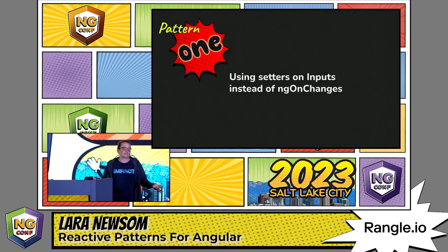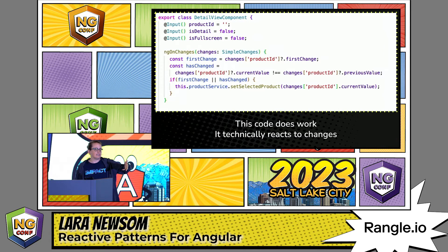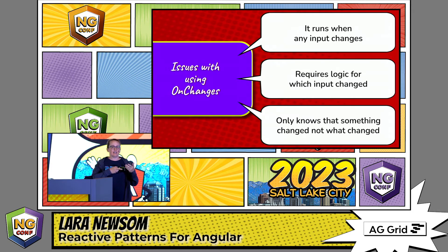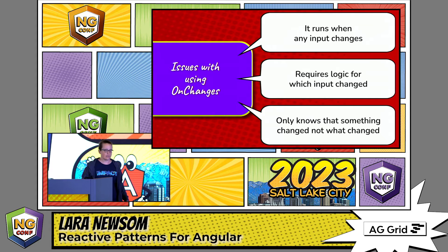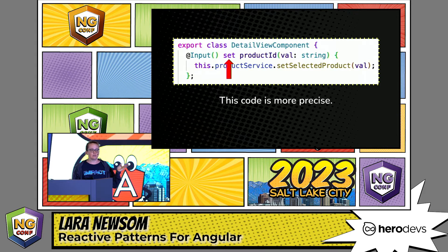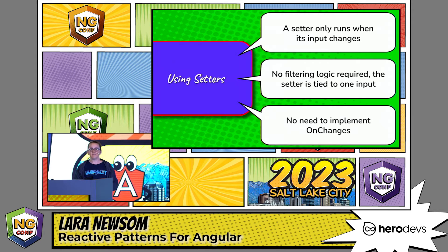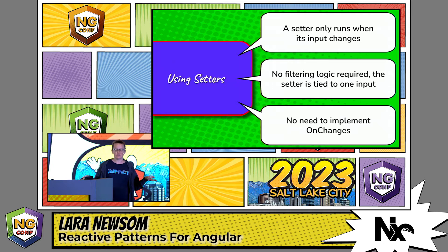Pattern number one: use setters on our inputs instead of using ngOnChanges. ngOnChanges will run any time an input changes — so this is code specifically to see if productId changes and do something with that. The problem is ngOnChanges literally runs any time any input changes, and that requires logic to figure out which input changed. Using the set keyword, we can turn inputs into setter functions, so when new values come in we use them to set values. The setter only runs on the input that changed, there's no filtering logic, and you don't have to implement ngOnChanges anymore.